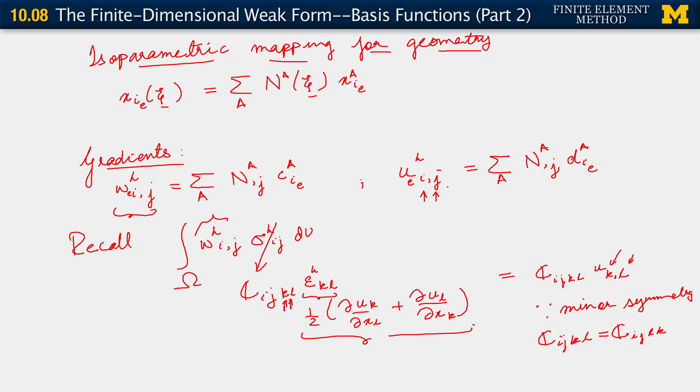So we do need to compute gradients. But once we have our isoparametric mapping, we know how to go about that as well. And what we are saying here now is that N^a_{,j} is just N^a_{,ξ_i} using as before the uppercase index for coordinates in the bi-unit domain. We have this times the derivative of ξ_i with respect to x_j for all j, as before.